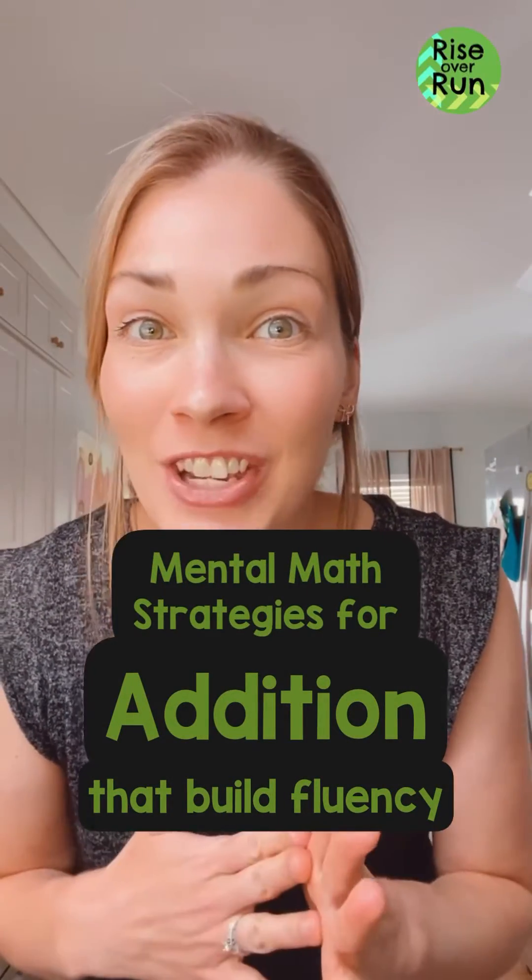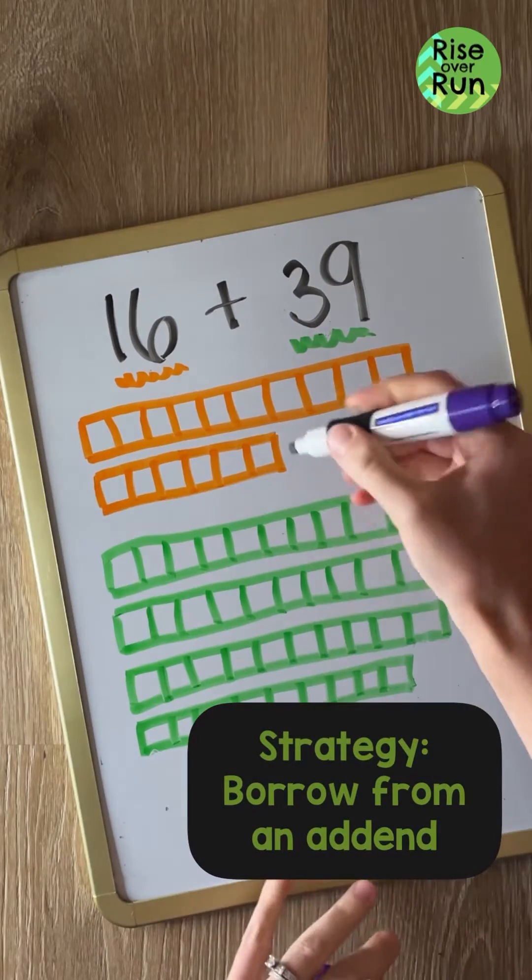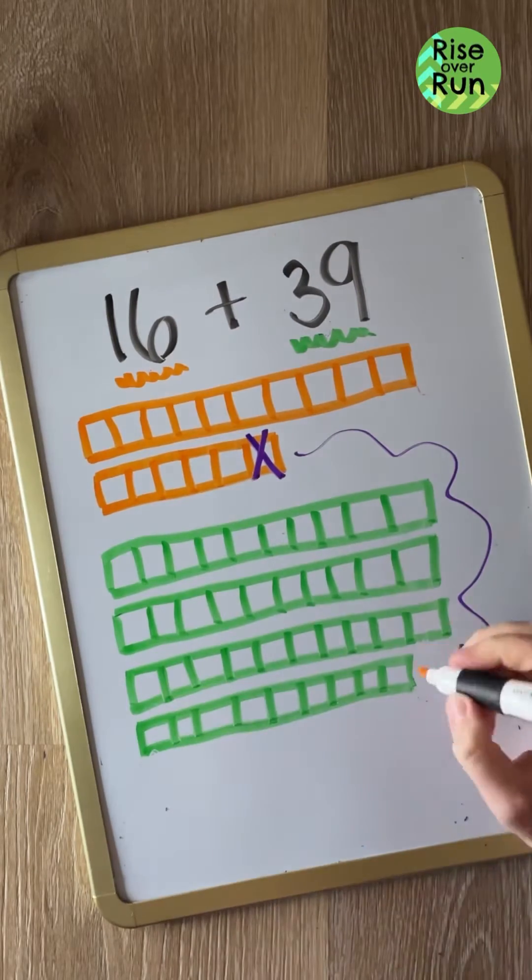Let's talk about mental math strategies for addition that build fluency. Starting with 16 plus 39, one strategy is to borrow from one addend to make our other addend a little friendlier.